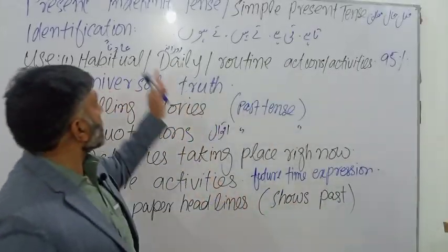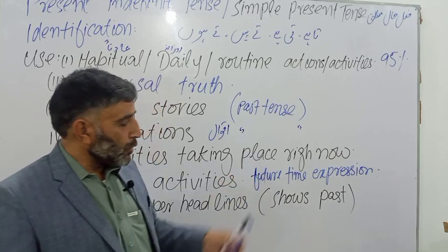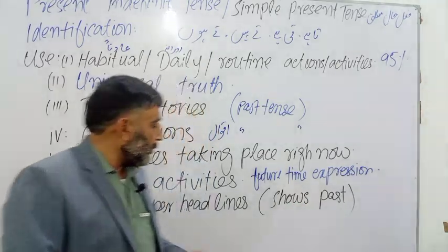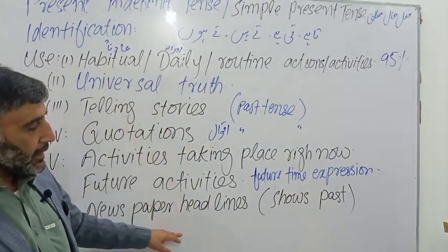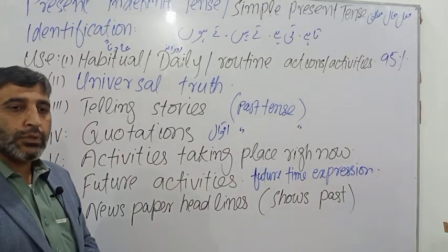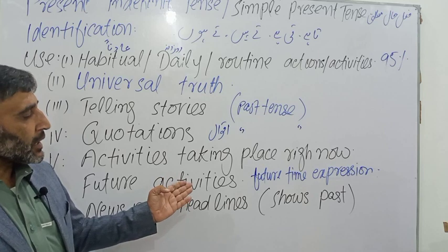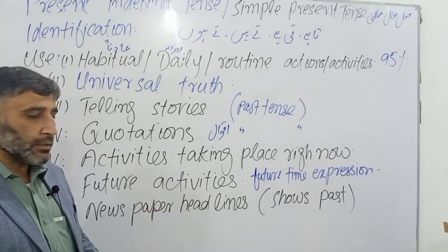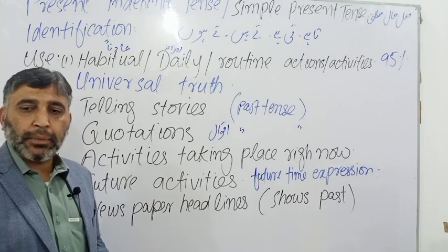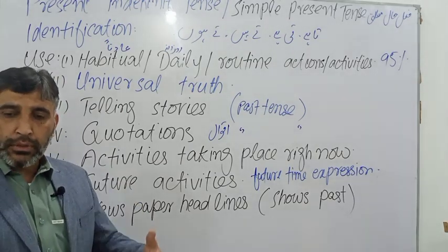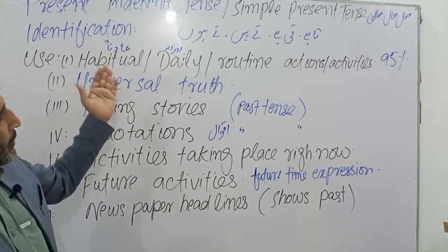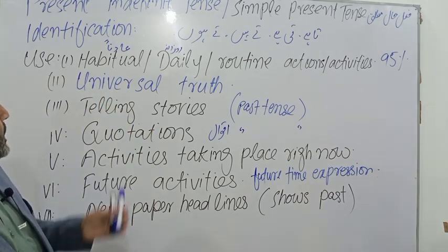When the newspaper headline is in present indefinite tense, the whole story is usually about past action. For example, the headline 'Imran Khan visits Saudi Arabia' shows that he visited Saudi Arabia, met Saudi authorities, signed agreements, and performed Umrah. The story is in the past but the headline is in present indefinite tense. So these are the main uses — but remember, we use this tense 95% of the time for habitual, daily, or routine activity.